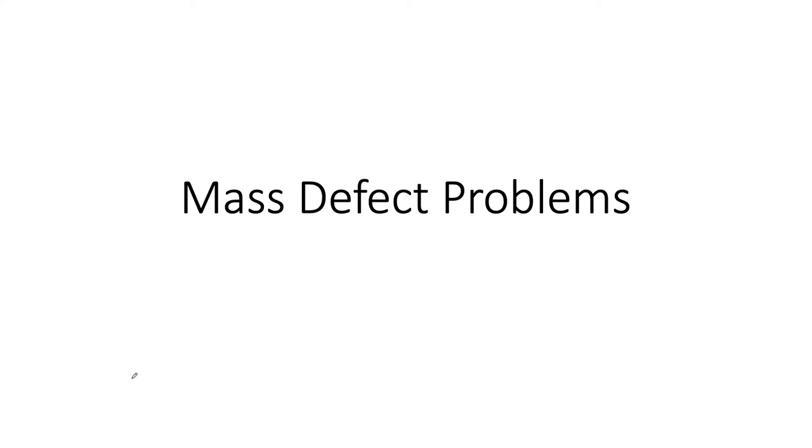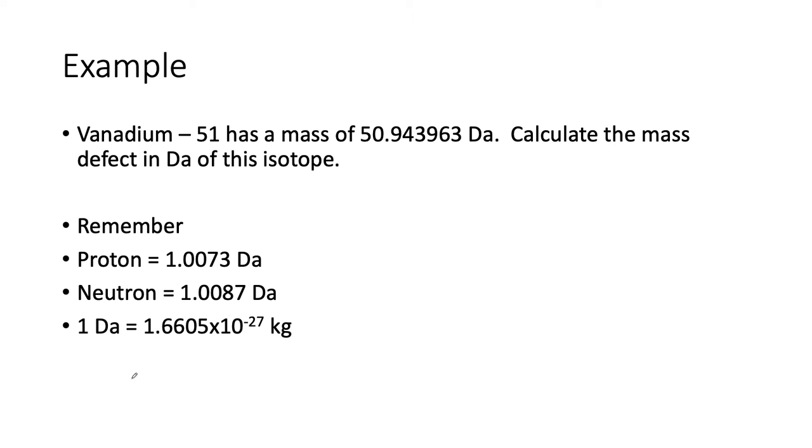So my example: I have Vanadium-51. Vanadium has 23 protons and 28 neutrons. So remember, the atomic number for vanadium is 23, so we're looking at vanadium 23-51.